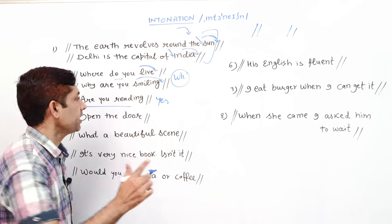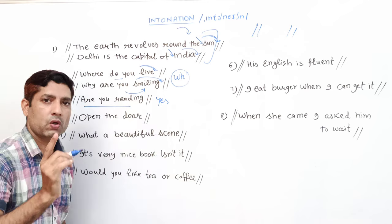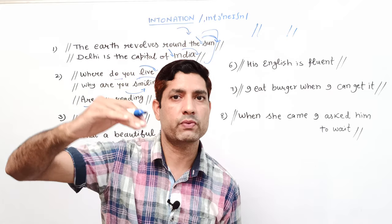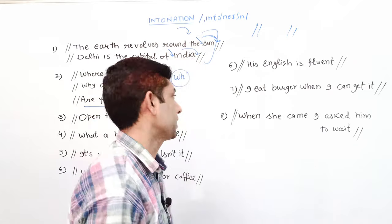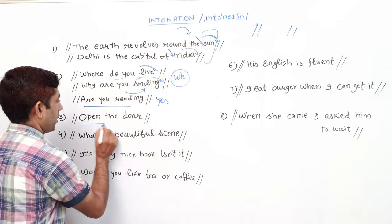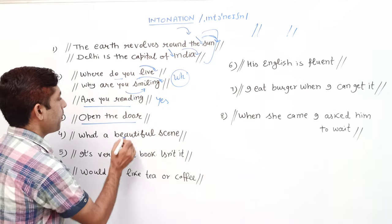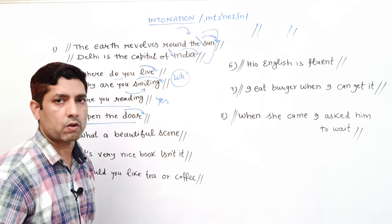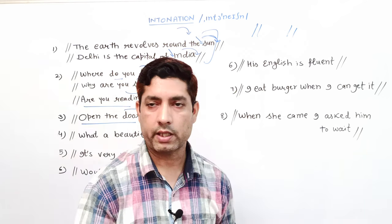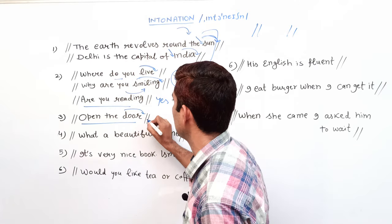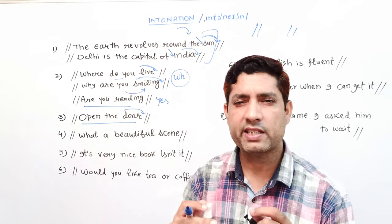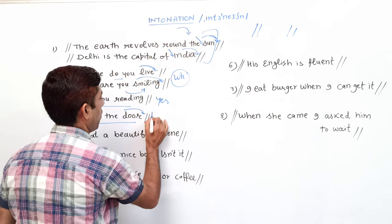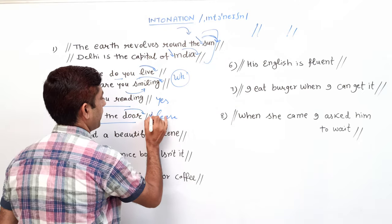Yes/no answer type questions में rising tone होती है: 'Are you reading?' — rising. 'Are you playing?' — rising. 'Are you watching TV?' — rising. अगर command हो तो: 'Open the door' — falling tone। Command में tone falling रहती है।